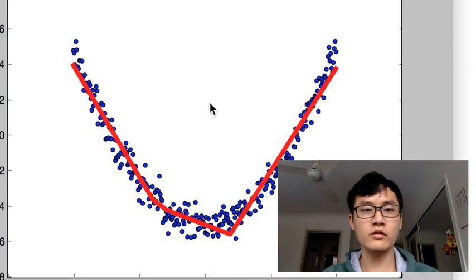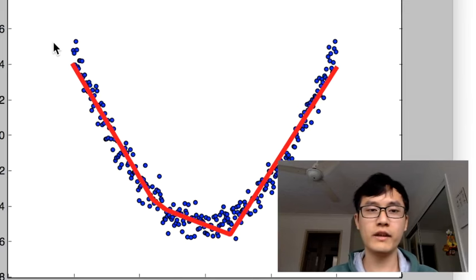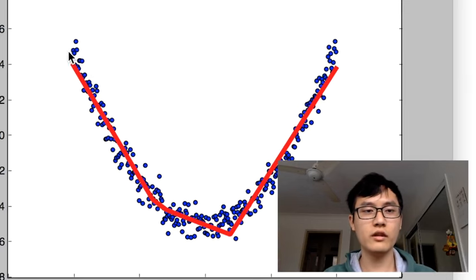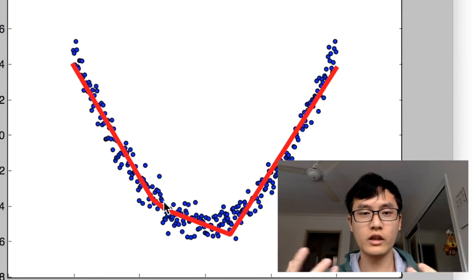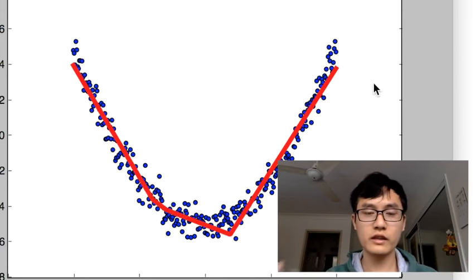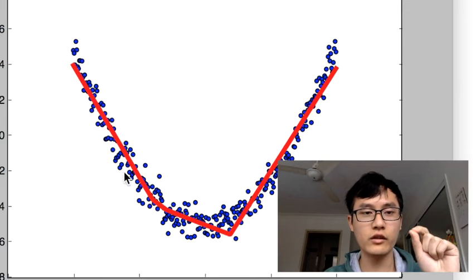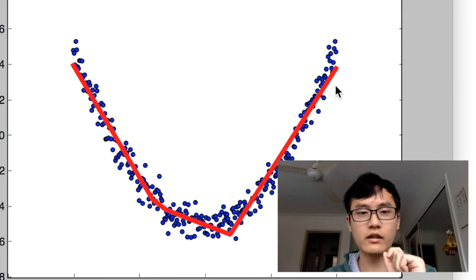Actually today we're just talking about the blue points. All the blue points on my data set is sort of y equals x squared plus something else. So the shape looks like a curve, and the red line is what the machine learns, or what the neural network learns to fit into the data. At the end of this training process, the machine will learn to fit the data by using a red line like this one.